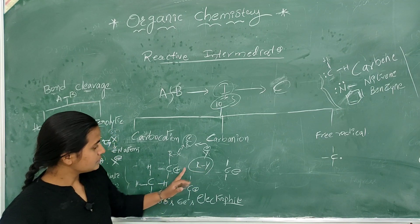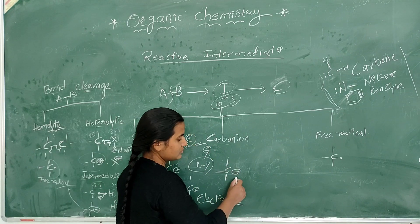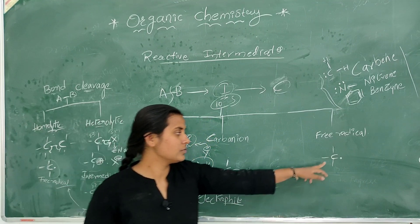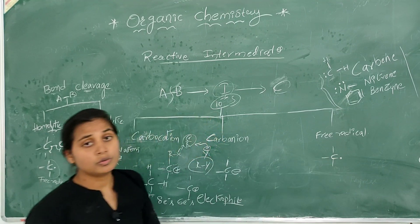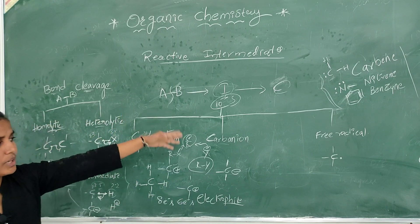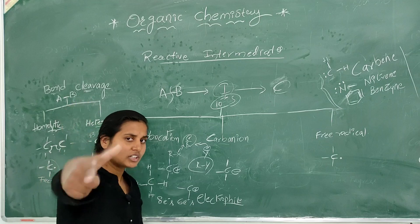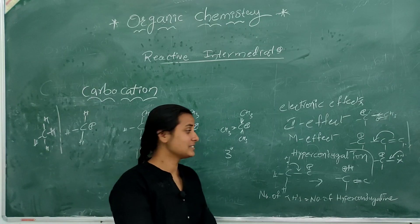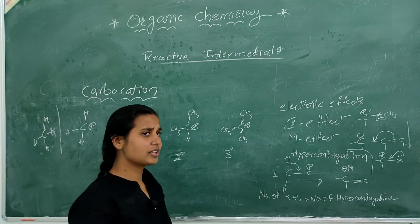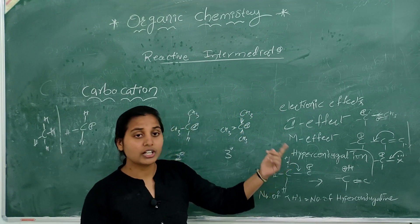So to summarize: carbocation is an electron-deficient species, carbanion has two more electrons, and free radical is a single electron species with one unpaired electron. These are the three main reactive intermediates.